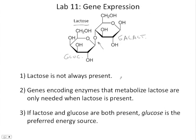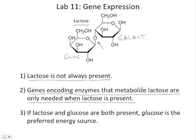The first thing to keep in mind is that lactose is not always present. When it is present it can be used as an energy source, but it's not always present. The next consideration is that genes encoding enzymes that metabolize lactose are only needed when lactose is present. For example, the LAC-Z gene we just talked about — it would be a waste of energy to produce those enzymes if there's no lactose around, because their only function is to break down lactose. The final consideration is that if both lactose and glucose are present, then glucose is the preferred energy source. If glucose and lactose are both around, the cell will utilize the glucose rather than starting to create all these new enzymes for metabolizing the lactose.